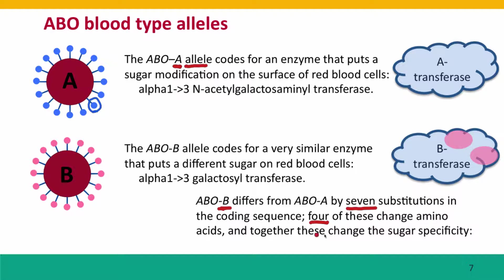Together, those four amino acid changes alter the specificity of the enzyme so that instead of transferring alpha-1,3-N-acetylgalactosamine, it transfers alpha-1,3-galactose. That's indicated by the pink blobs on the blood cells.